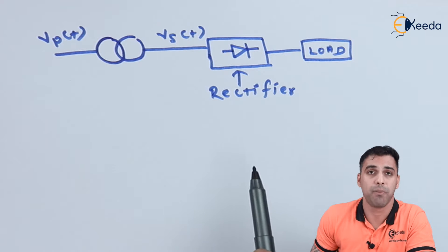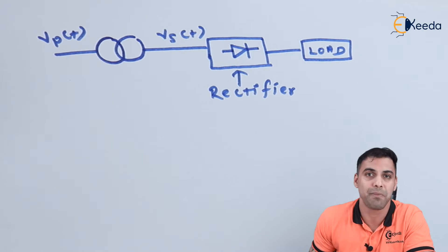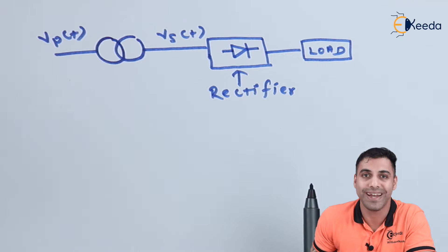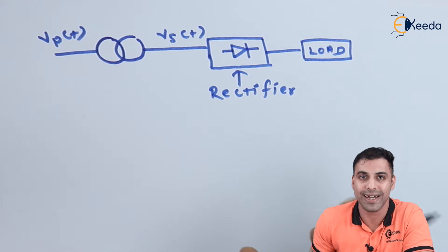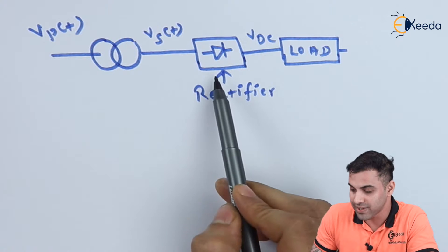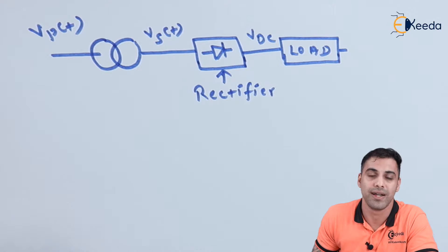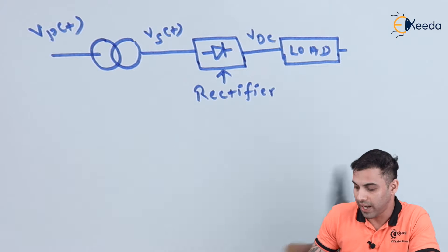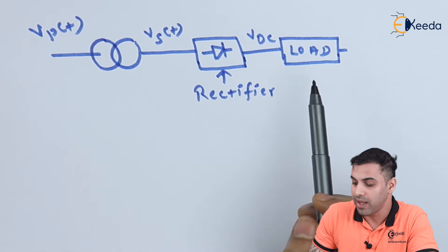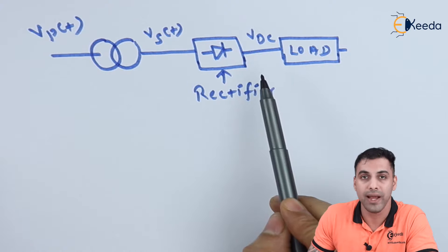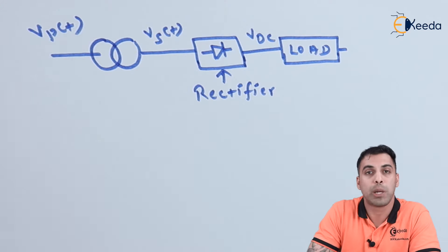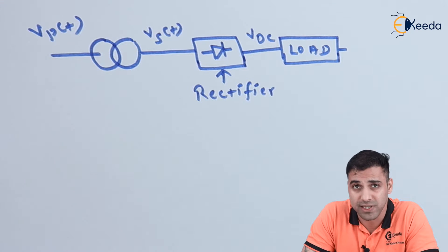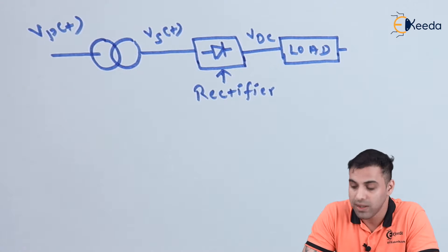Let's talk about some basic terminologies and mathematical expressions that we need while going through the rectifier in detail. After rectification, the output becomes V_DC — the direct or DC voltage we get after rectification — and I have connected a load so that I can get a DC current from the DC supply.